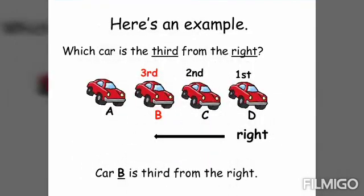Another example: which car is the third from the right? We have four cars labeled A, B, C, D, and the instruction is to count from the right. Starting from D — D is first, C is second, and the third one is car B. Therefore, car B is the third from the right.